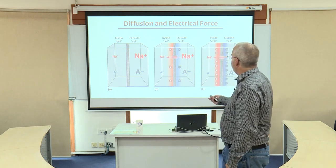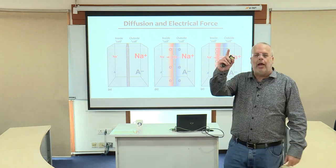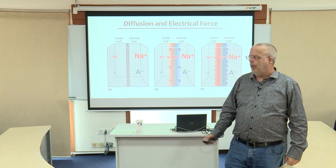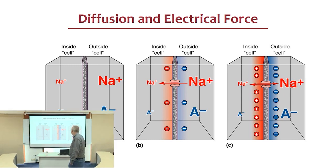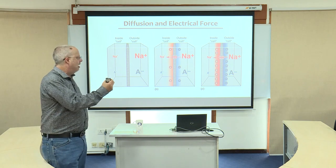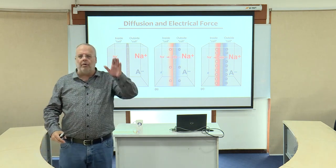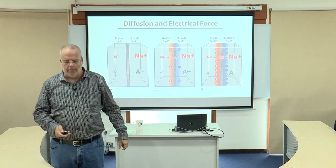Here we have a box with high levels of sodium on the right — that's what the big NA means — low levels of sodium on the left, and an impermeable barrier in the middle. We put in a channel that allows sodium to flow back and forth. Sodium moves from the area of high concentration down its concentration gradient to the area of low concentration. Over time, as that positive ion moves into the interior, the positive charge builds up until it reaches equilibrium — there's really no net difference into or out of the neuron at that point.